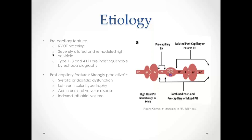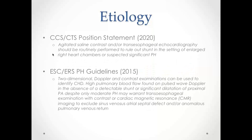Features strongly predictive of post-capillary PH are systolic or diastolic dysfunction, LVH, left-sided valvular disease, or an enlarged left atrial volume index. The CCS 2020 position statement suggests agitated saline or TEE routinely in the setting of enlarged right heart chambers or suspected significant PH. ESC goes further, suggesting TEE with contrast or CMR to exclude a sinus venosus atrial septal defect and/or anomalous pulmonary venous return when you see high pulmonary blood flow without a detectable shunt, or significant dilatation of the proximal PA with only moderate PH.